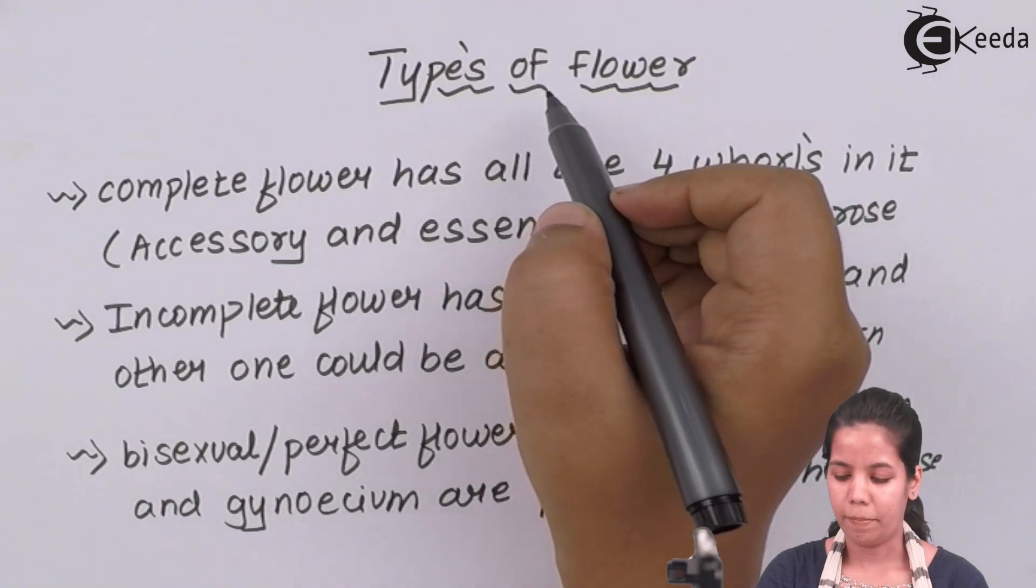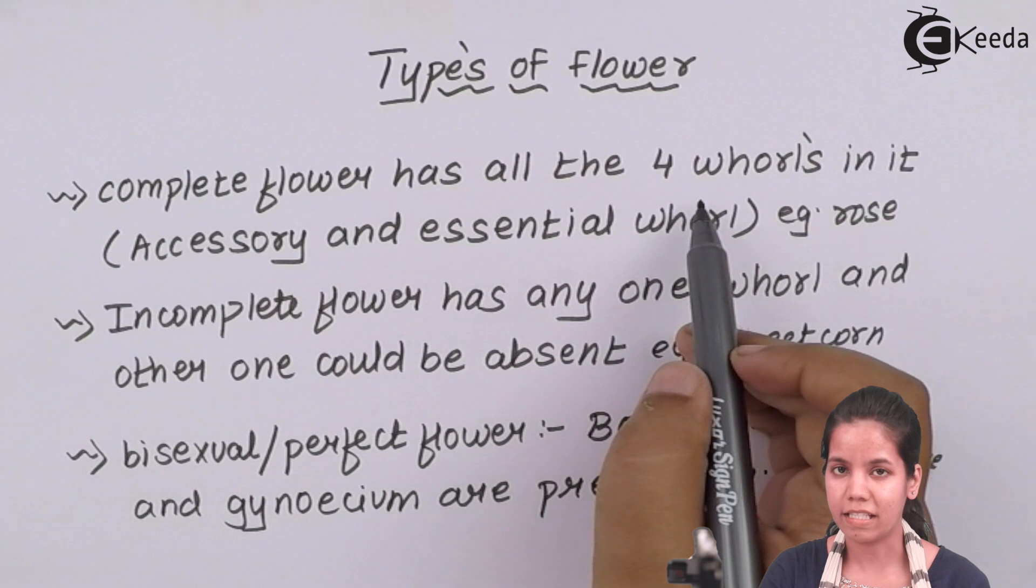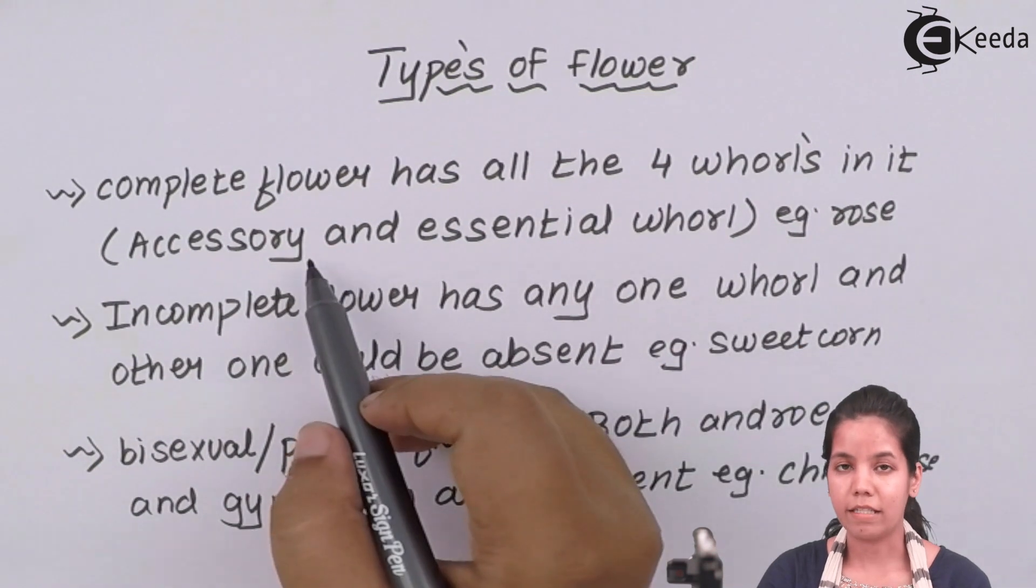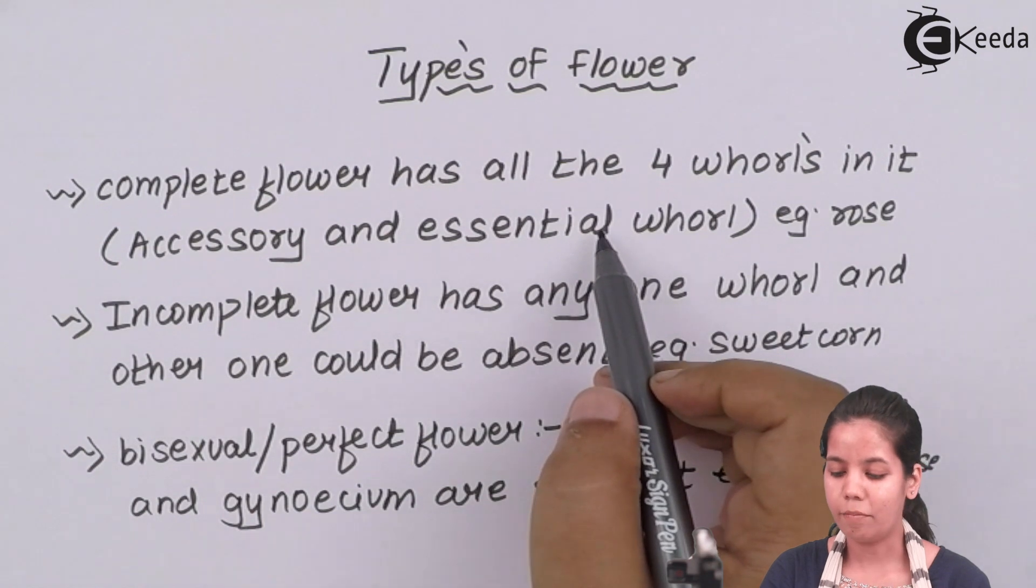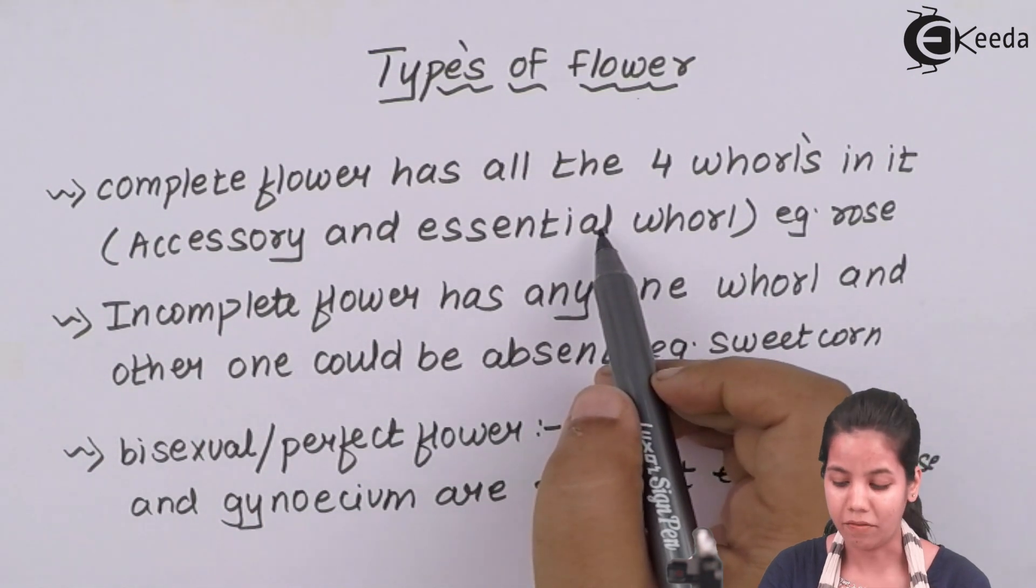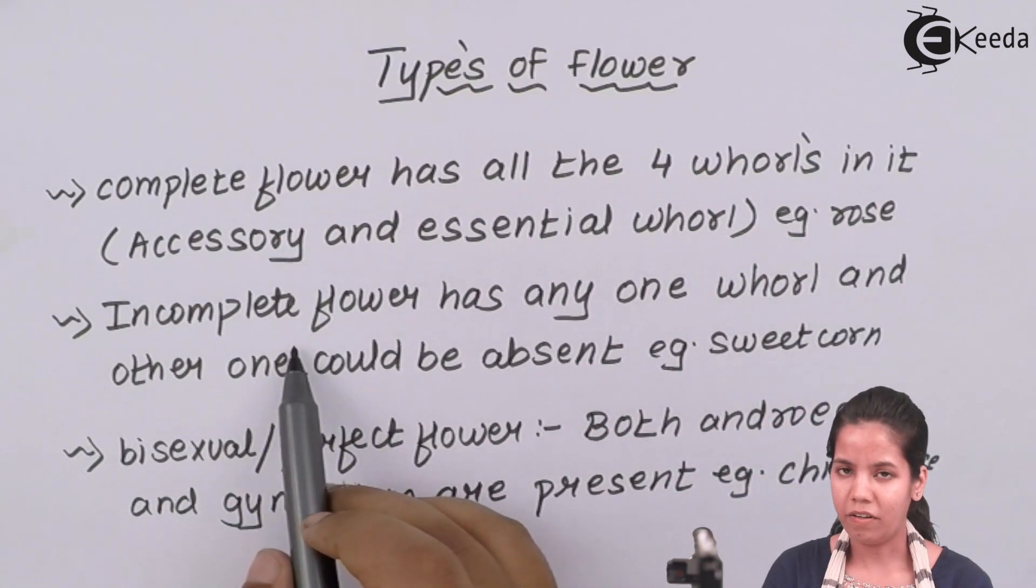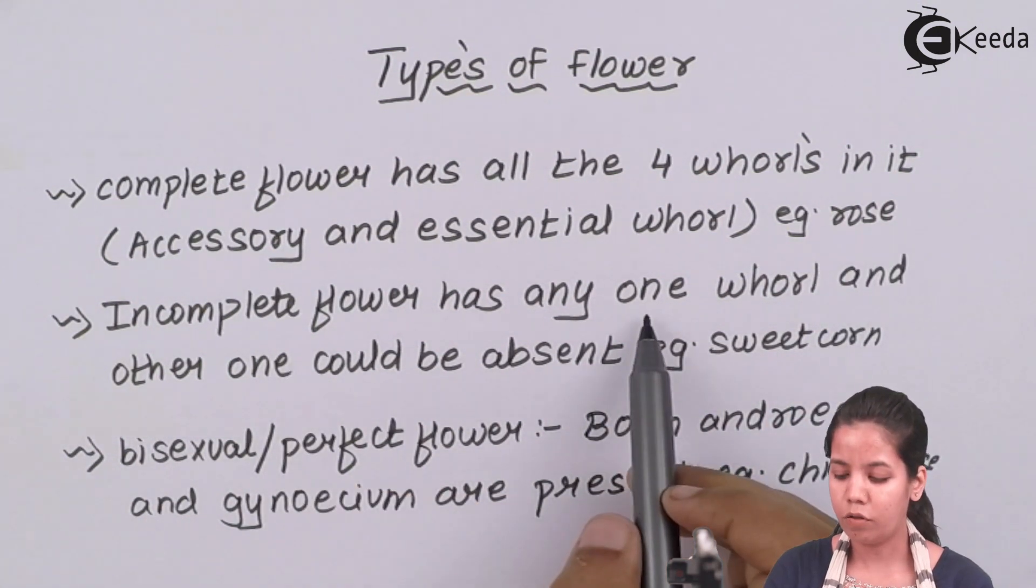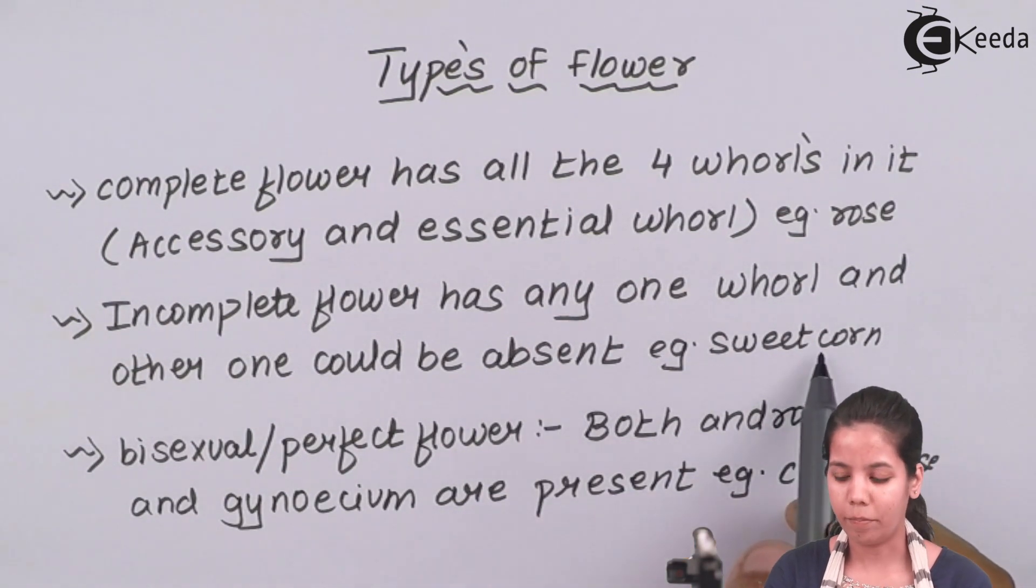Types of flower. Whenever a flower has all the four whorls present in itself, that is the accessory whorl and the essential whorl both are present, then that flower could be called as a complete flower. Example is your rose. Incomplete flowers has any one of the whorl or part absent, which is sweet corn.